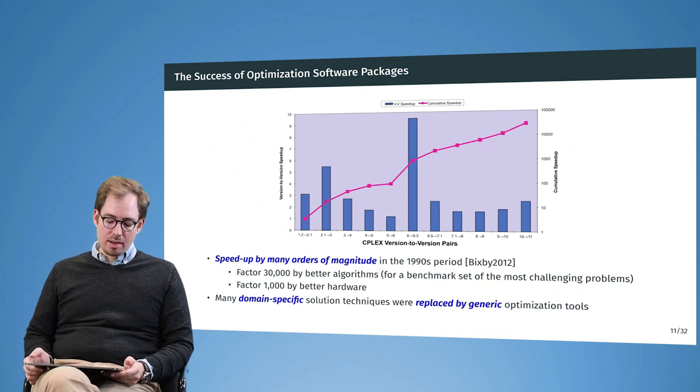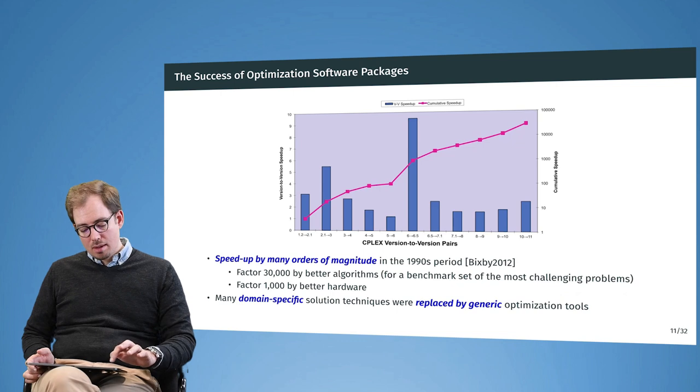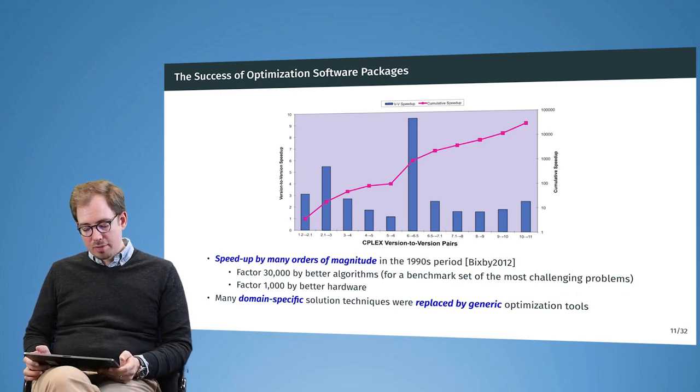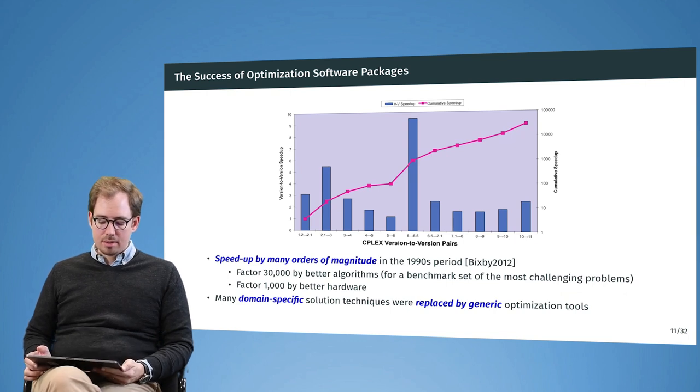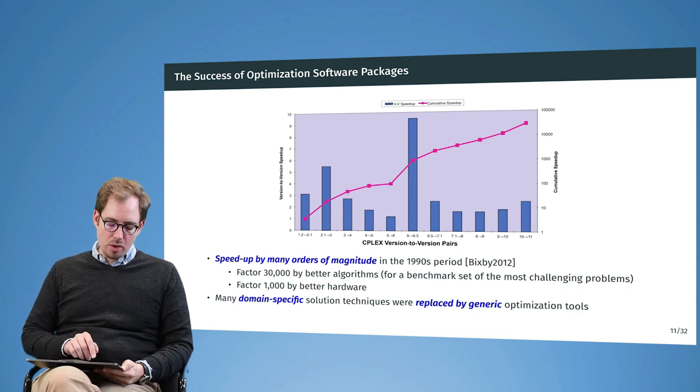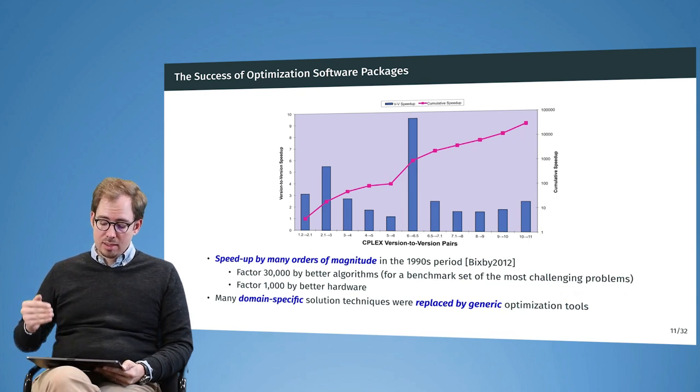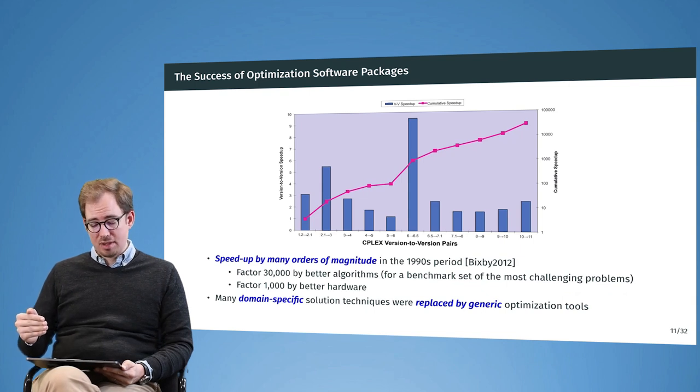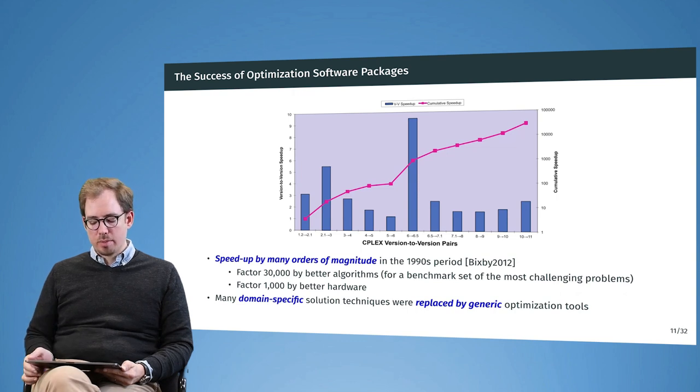Here you see a graph that shows this explosion of efficiency of the optimization software. This comes from CPLEX, a software package by IBM. They have been starting this graph in the early 1990s. What you see here as the blue columns is the version-to-version improvement. From one software release of IBM CPLEX to the next, how much faster are the algorithms on the benchmark problems?